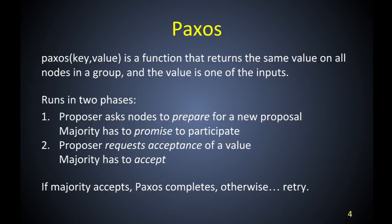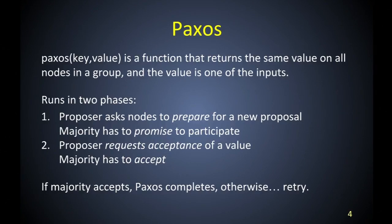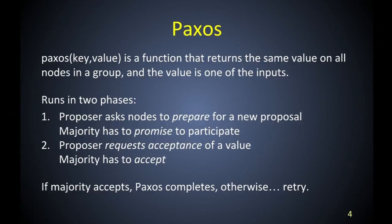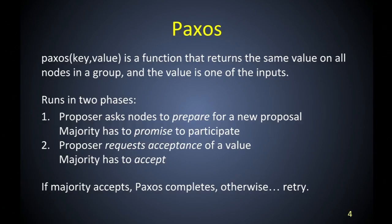It runs in two phases. If you call this function, you become a proposer — you propose a new value. First you need to ask nodes to participate: please prepare for a new proposal. You need to get the majority of nodes to participate. The concept of a majority is quite important in Paxos. If you cannot get a majority to participate, for any reason — failures or other things — you start over. If you do get a majority, you go to phase two and request that these nodes accept a value. If the majority of nodes accept a value, you have consensus and Paxos completes. If anything goes wrong, you start over, and there's no guarantee this doesn't take forever — but usually it doesn't.